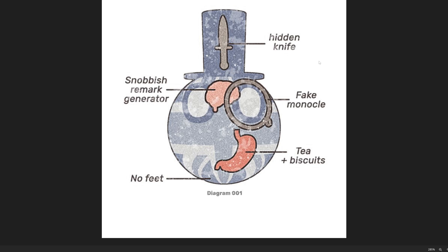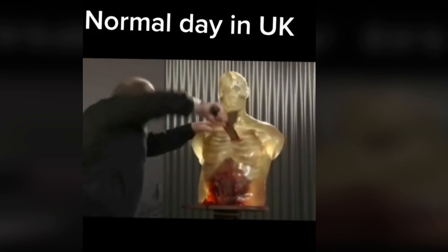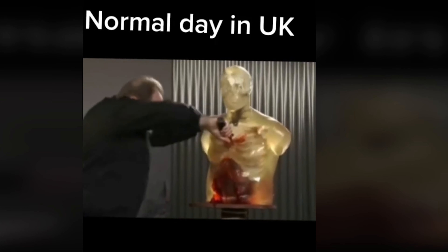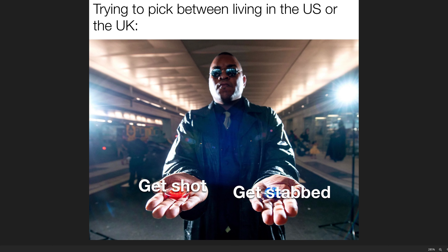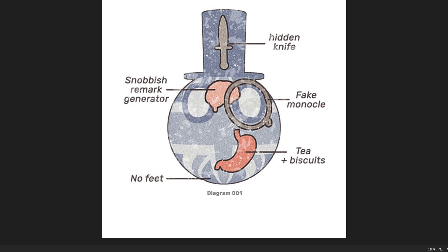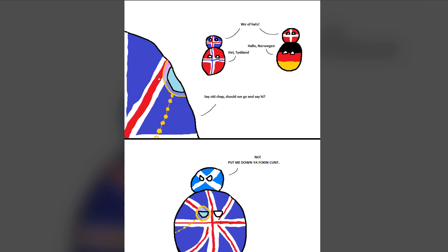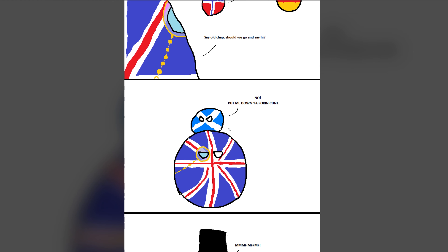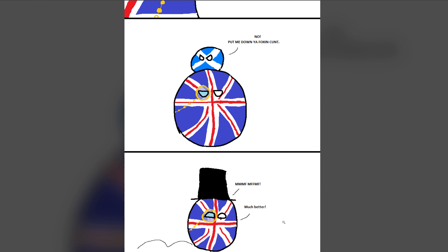Another meme shows the UK wearing a top hat to hide their knife — referencing the stereotype of the UK loving to stab people, especially in London, which has a realistic problem of constant stabbing. They also have a fake monocle to hide their snobbish brain, their stomach being a tea-and-biscuit digester, and them having no feet. Next, the UK is trying to talk to the Nordics and Germany, both of which have geographically northern countries above them — and the UK also has a geographically northern country inside it: Scotland, which is always very angry. The UK wears a top hat to hide Scotland, so Scotland doesn't cause trouble.